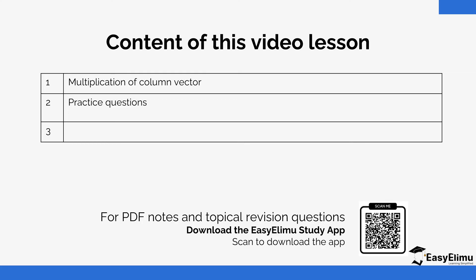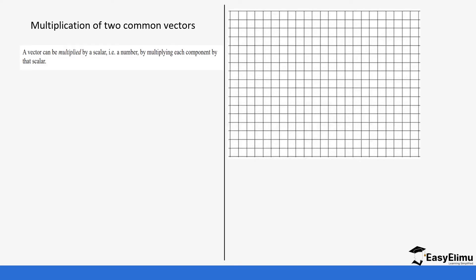In this lesson we are using column vectors to multiply with scalars. So it's an actual vector, not an unknown. When we talk about a vector, it can be multiplied by a scalar — a number — by multiplying each component by that scalar. So if you have the x unit and the y unit, the scalar multiplies both. If you have a scalar k and a column vector (a, b), then k times that vector gives you (ka, kb).